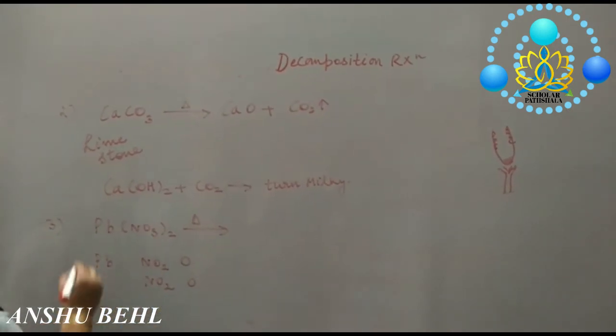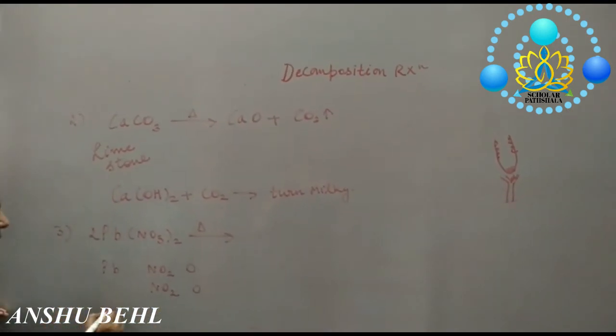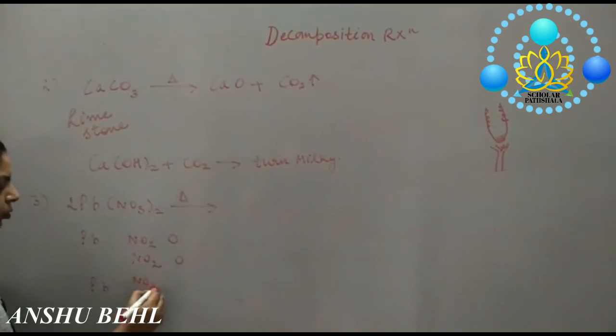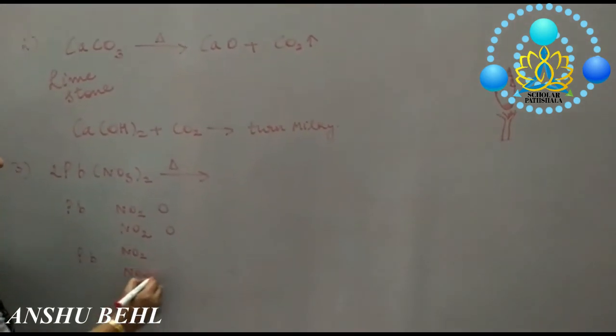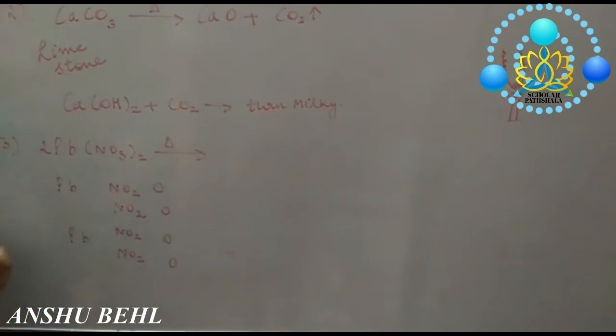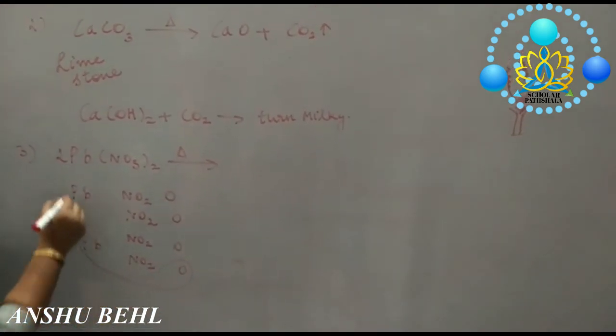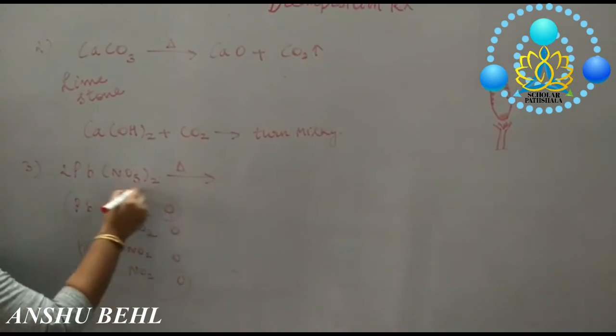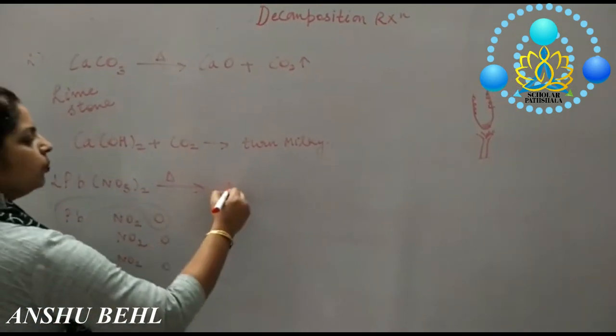We are here taking two molecules of lead nitrate. It will form, combine them like this: 2PbO.